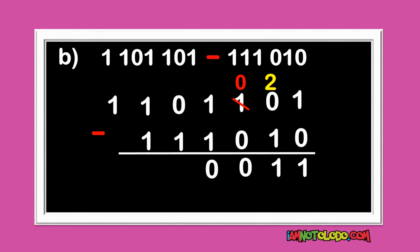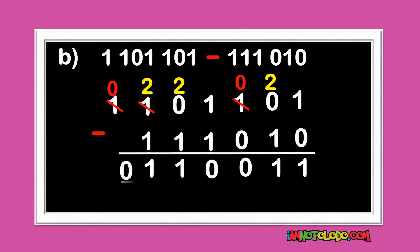0 cannot minus 1. We borrow from here. When we borrow, this becomes 0 and this becomes 2. 2 minus 1 is 1. 0 cannot minus 1, so we borrow from here. We borrow and add to this. This becomes 2. 2 minus 1 is 1. This is already 0, so we can write down 0. This is our final answer. Do you understand? Good.